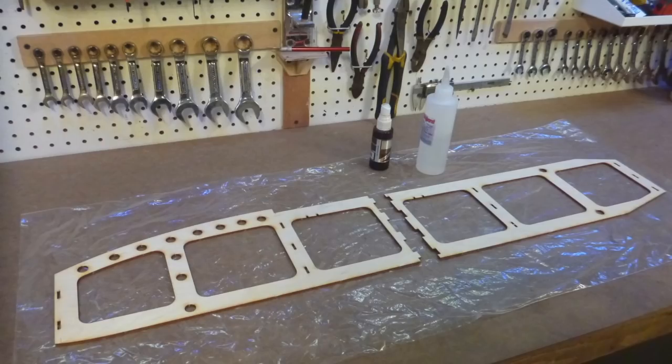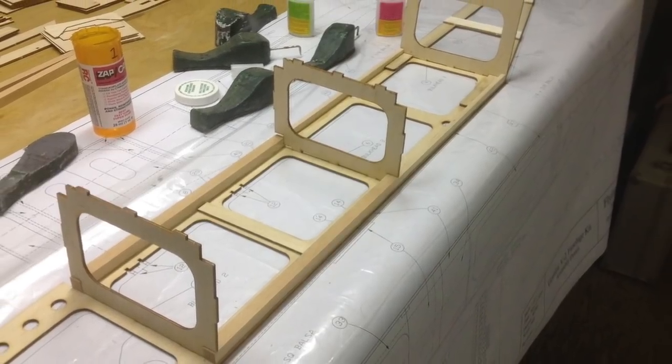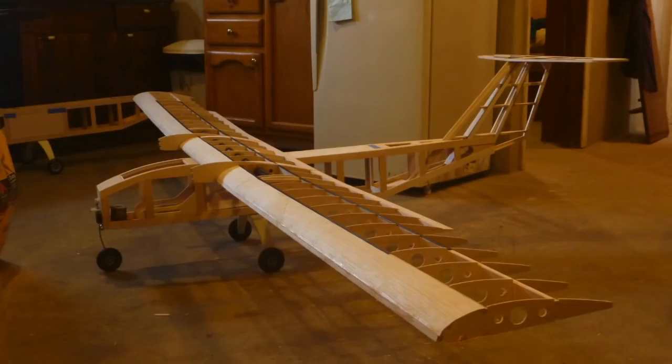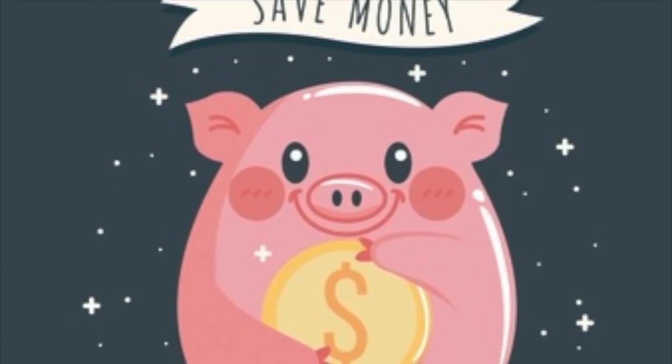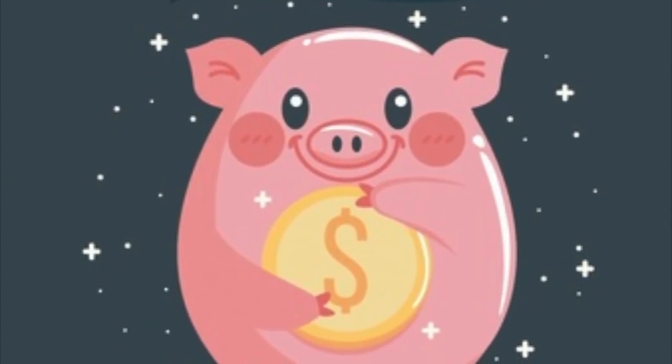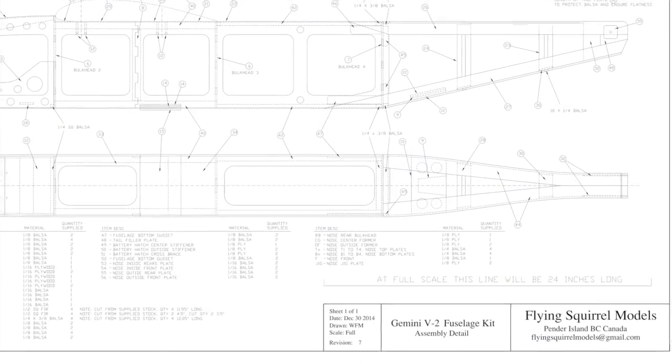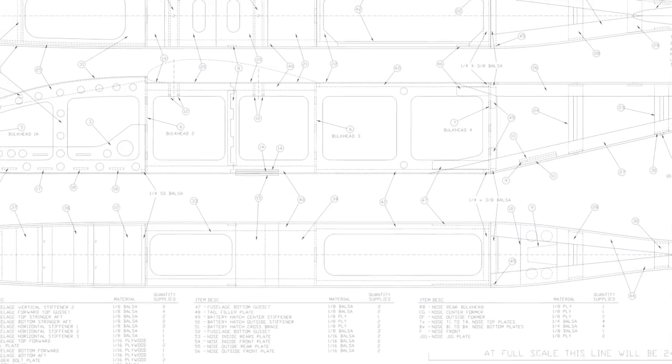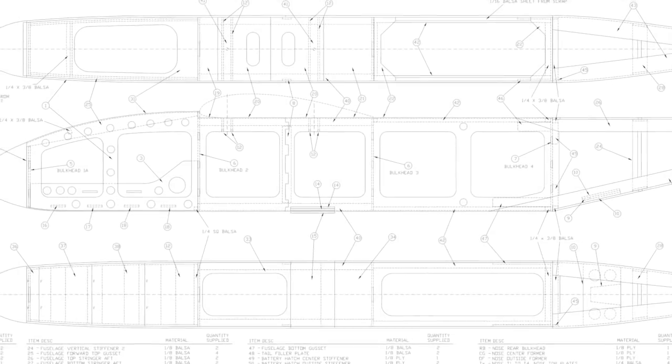First we'll need to locate the fuselage side pieces, part numbers 1 and 2. They can be assembled over the full-size printed plans, but today we'll be showing you an alternative method which allows you to build the fuselage while avoiding the additional cost of printing the fuselage plans full size. You will want to have the fuselage assembly drawing PDF handy, at least on your computer, for parts placement reference.